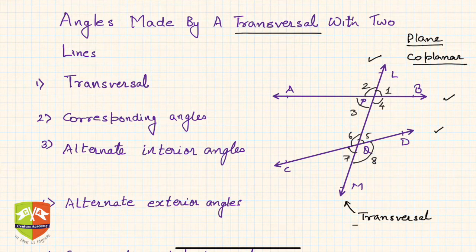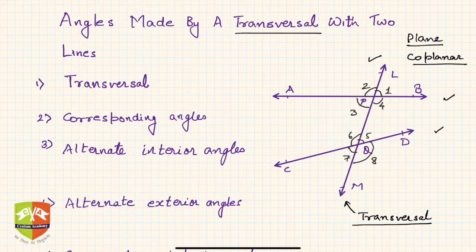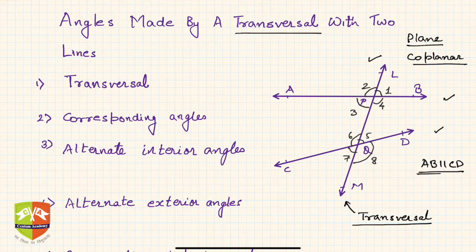The transversal starts from one end and cuts across both the lines. Associated with the transversal there are a few angles, and today in this session we are going to define them. In the next session we'll understand the properties of those angles — for example, when AB becomes parallel to CD, all these angles start behaving in a particular way.